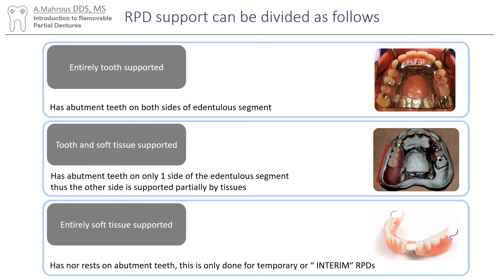An RPD with edentulous spans that have abutment teeth on either end is considered to be totally tooth-supported. RPDs that have only one end supported with an abutment tooth are considered to be tooth-tissue supported. Other partials have no rests at all, like temporary partial dentures, and are totally tissue-supported.